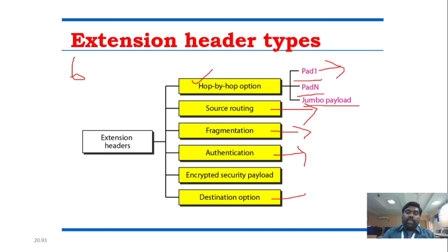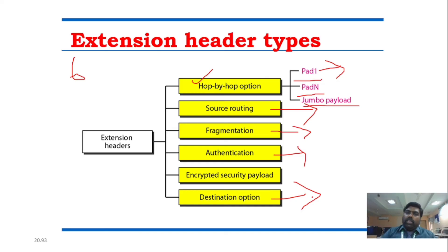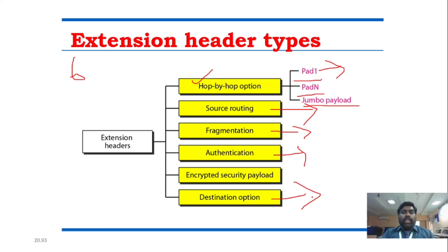The last option is the destination option. This is a peculiar option — it is used when we need to send data with a destination-specific header. We can use this particular extension header to send any destination-specific information.